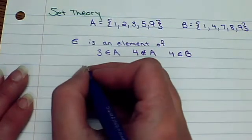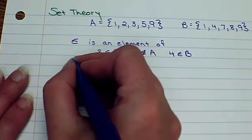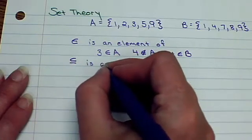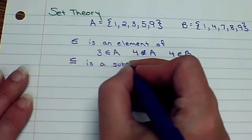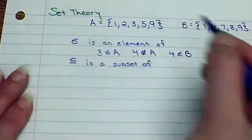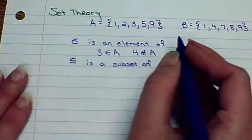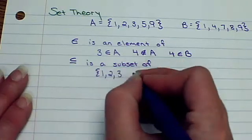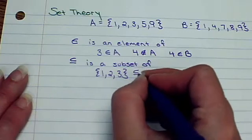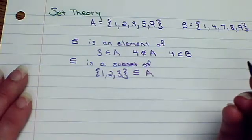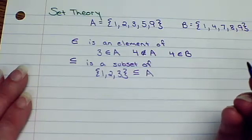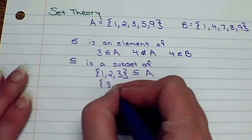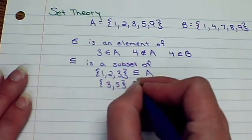Now we also can talk about subsets. This means is a subset of. Now, sets once we've defined them, we can use their letter, or they're listed in brackets like this. So we could say that 1, 2, 3 is a subset of A. It's a piece of that one, right? So could we say that 3 and 5 are a subset of A?